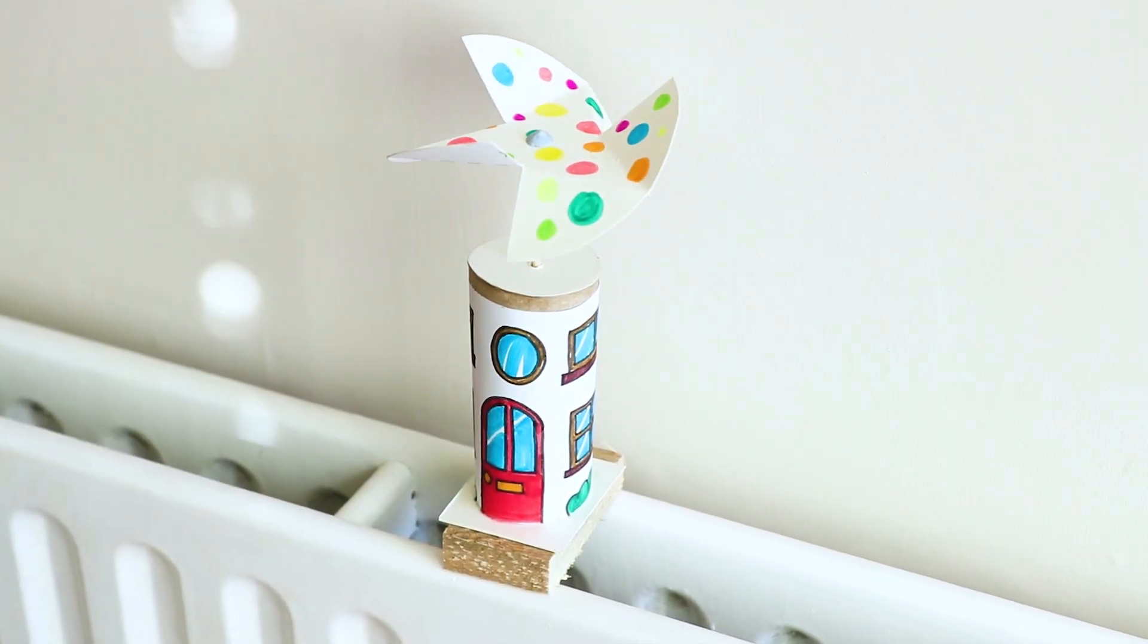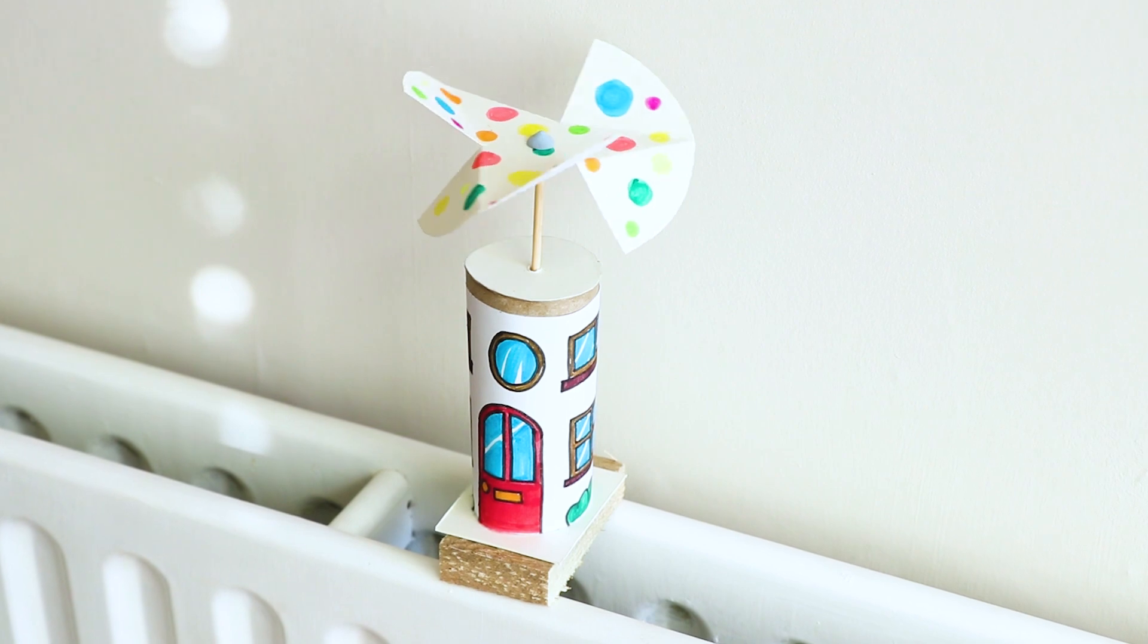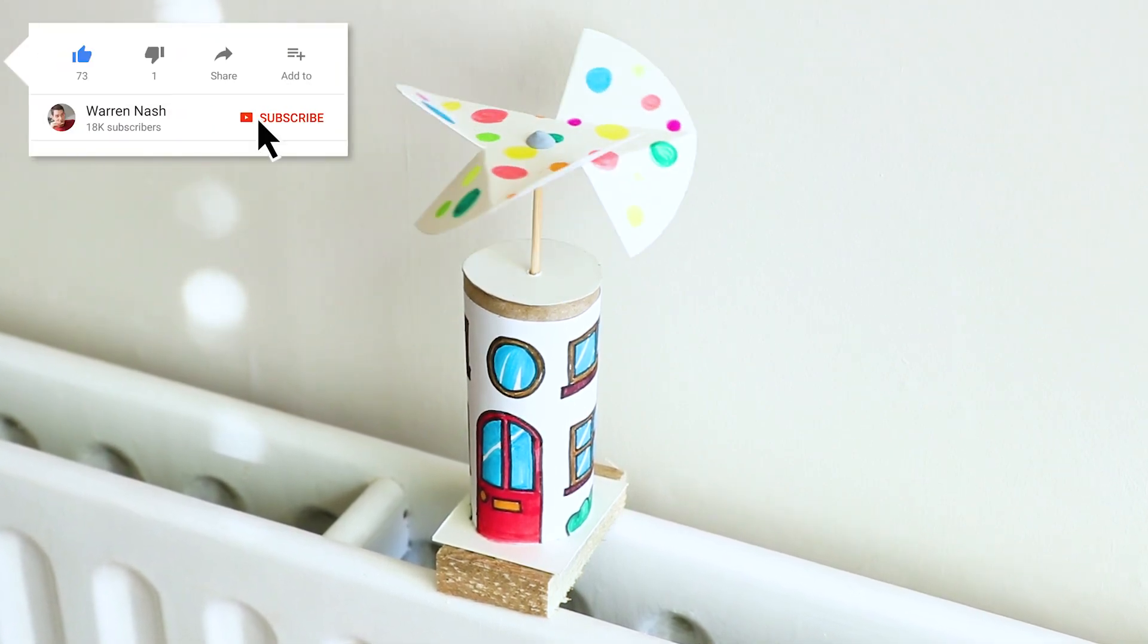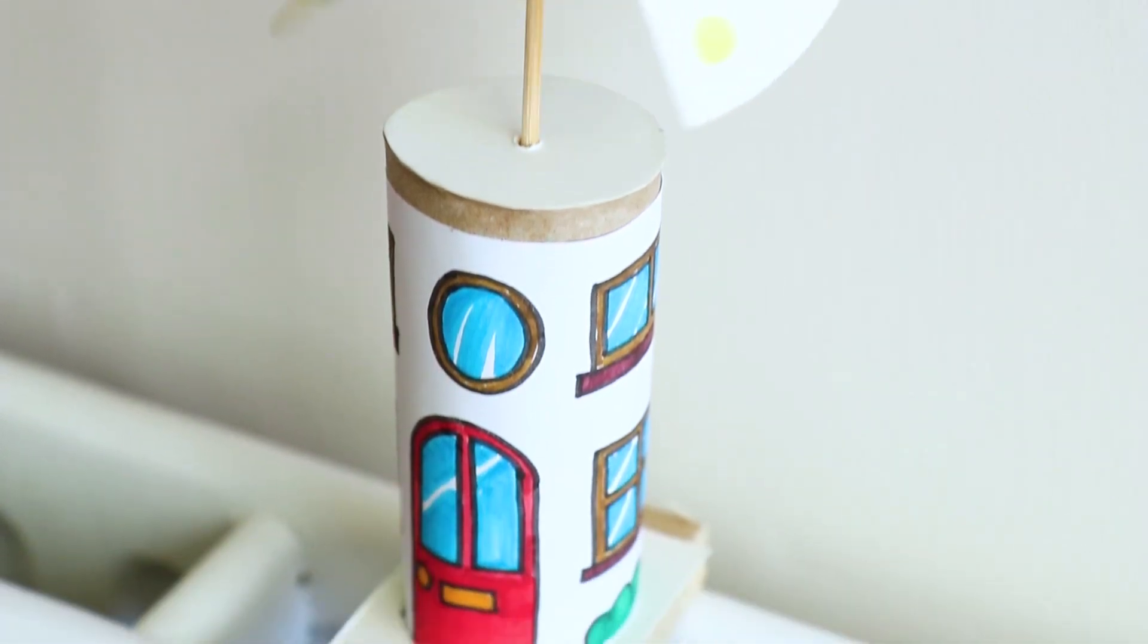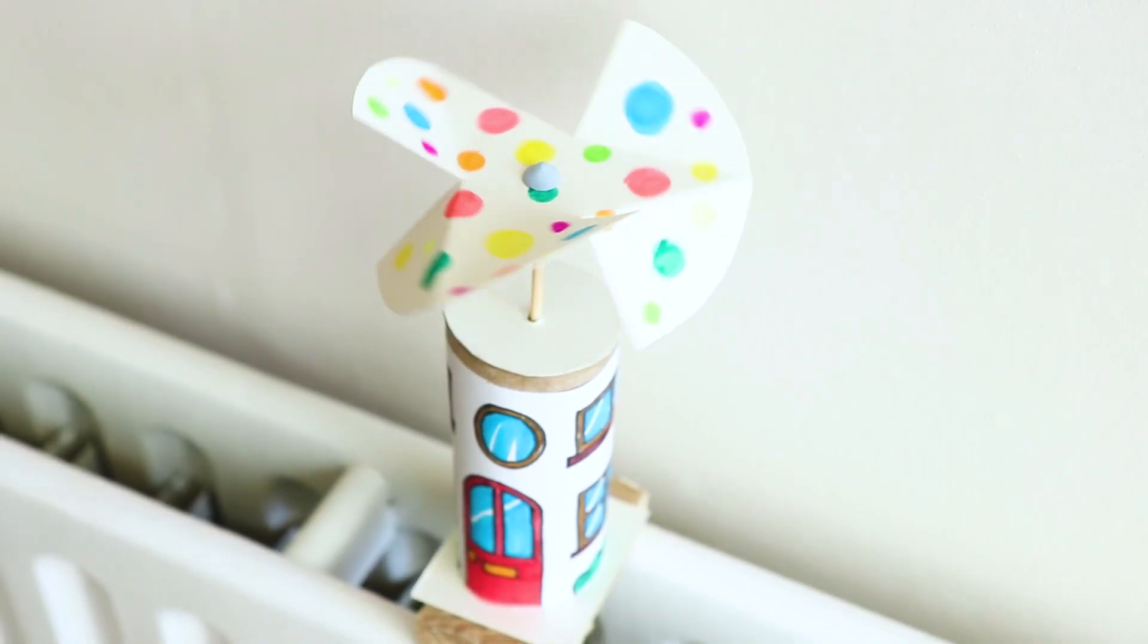Then your windmill's complete. Simply slot the fan blades through the hole in the top of the windmill and place on top of a heat source. Always make sure you place the windmill on something heat resistant and never place it on a heat source that can cause danger or a fire risk.